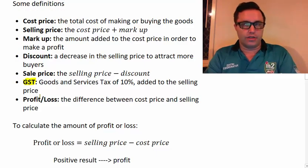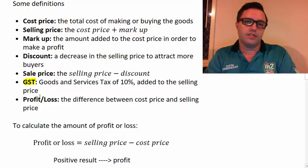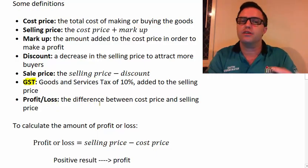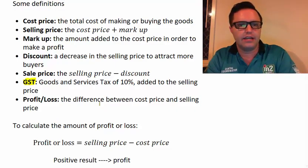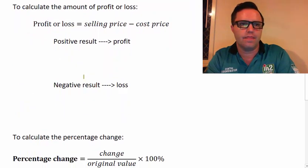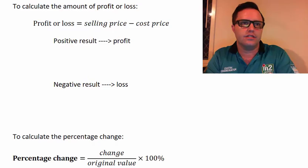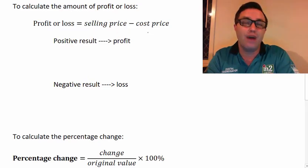And that's not applied to everything, but to a lot of lots of things. And profit or loss is the difference between the cost price and the selling price. Okay. So to calculate the amount of profit or loss, so profit or loss is equal to the selling price minus the cost price.